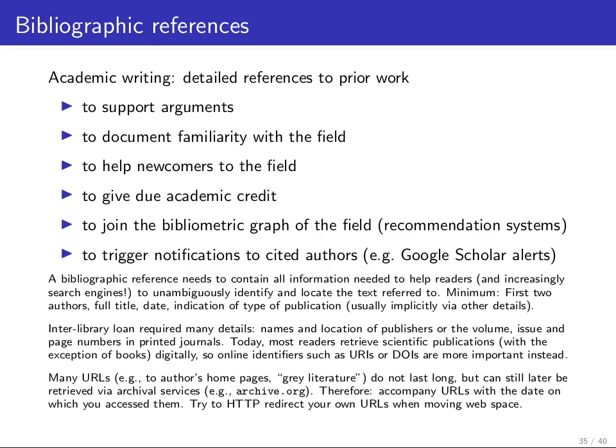If it's a paper publication, you need to include all the details required to find it via interlibrary loan: the names and locations of the publishers, issue, page numbers, printed journals, and so on. Today, most newer scientific publications are retrieved online, and there are other identifiers such as URIs and digital object identifiers.